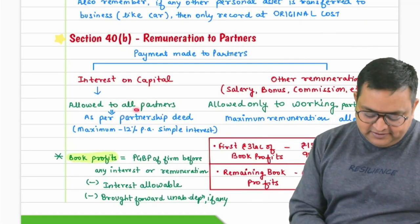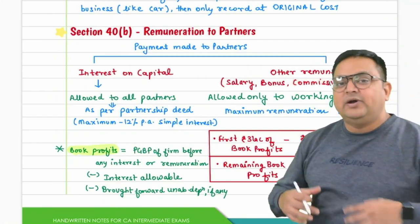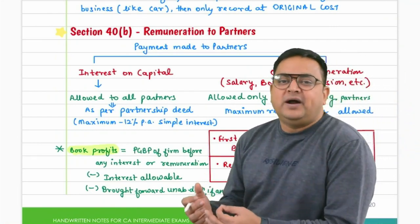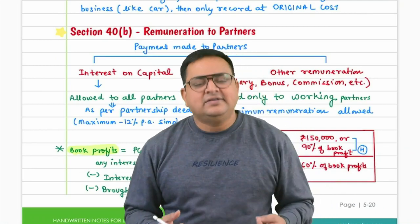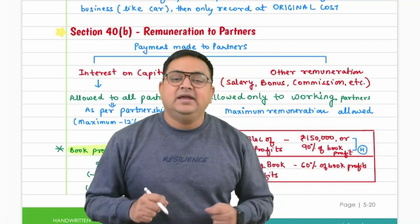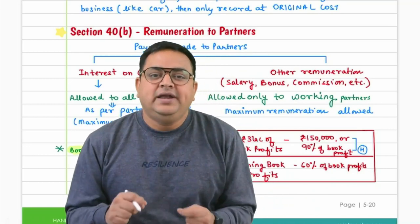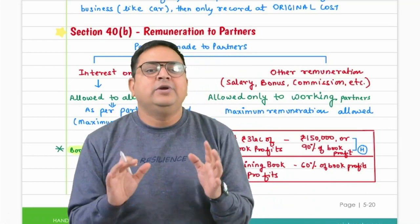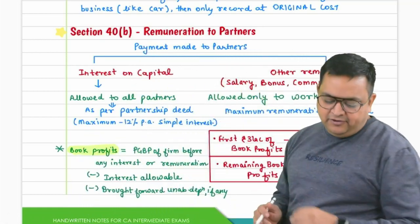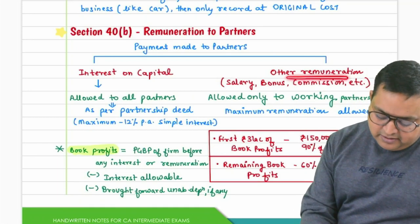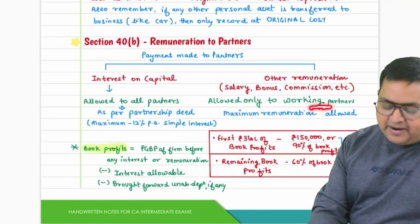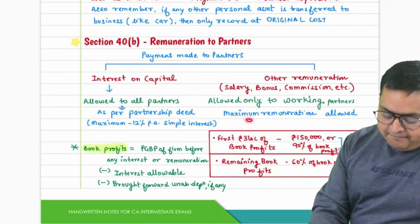Other remuneration — salary, bonus, commission — can also be paid to partners, but only to working partners, not to non-working or sleeping partners. So interest on capital is allowed to all partners up to 12%, while other remuneration such as salary, bonus, and commission is allowed only to working partners.